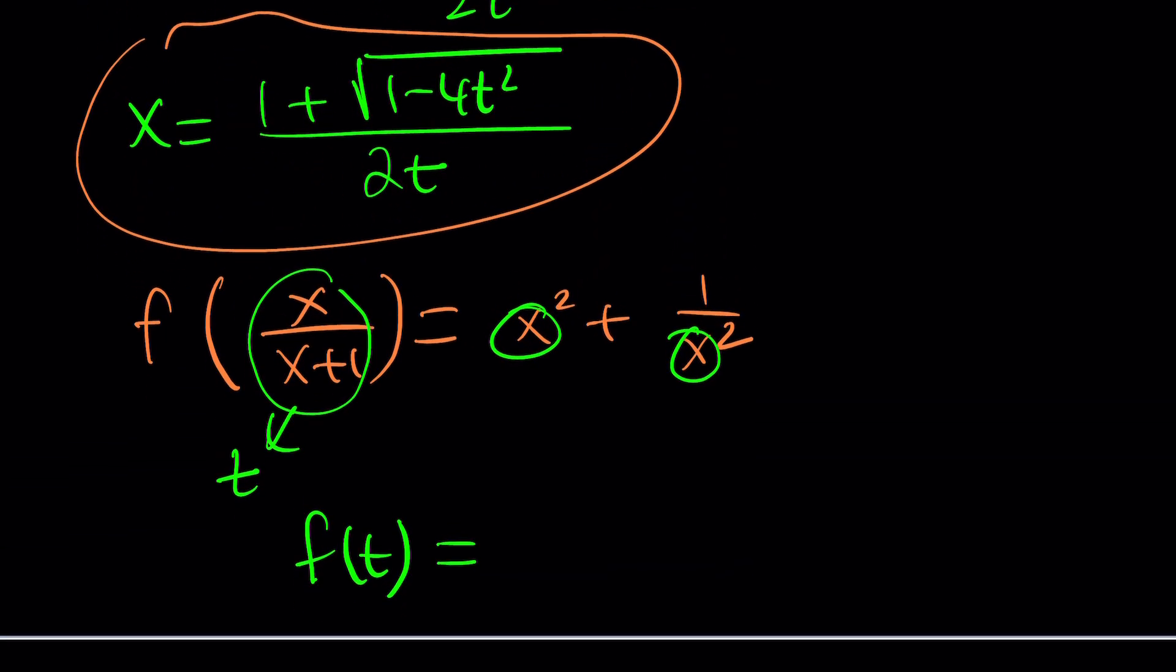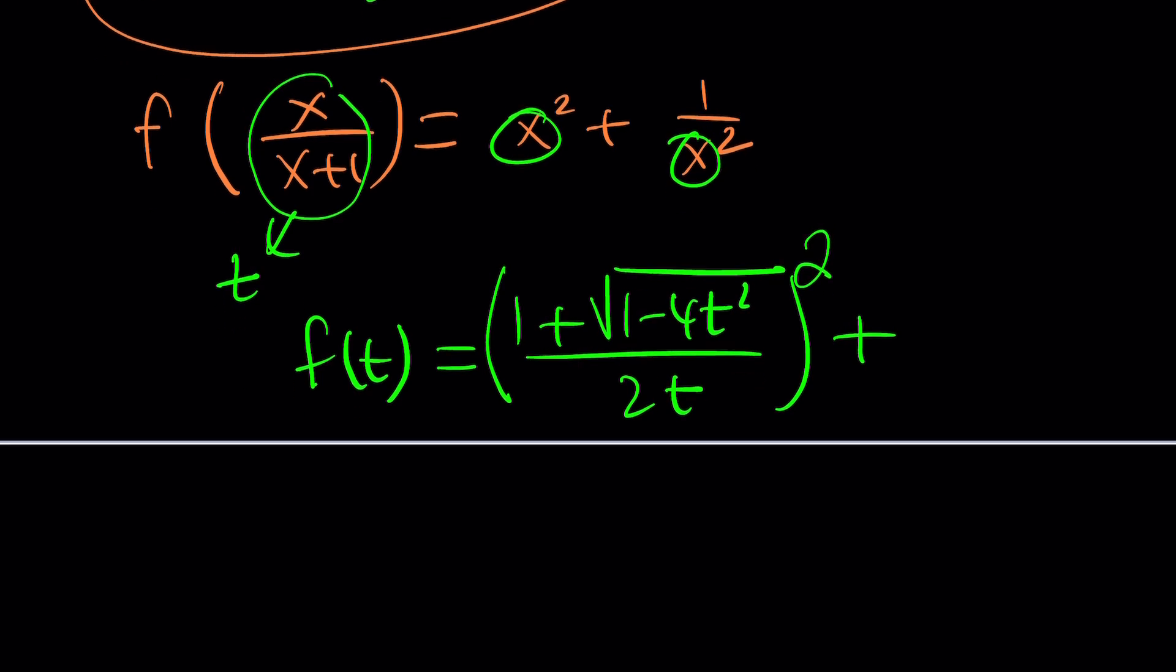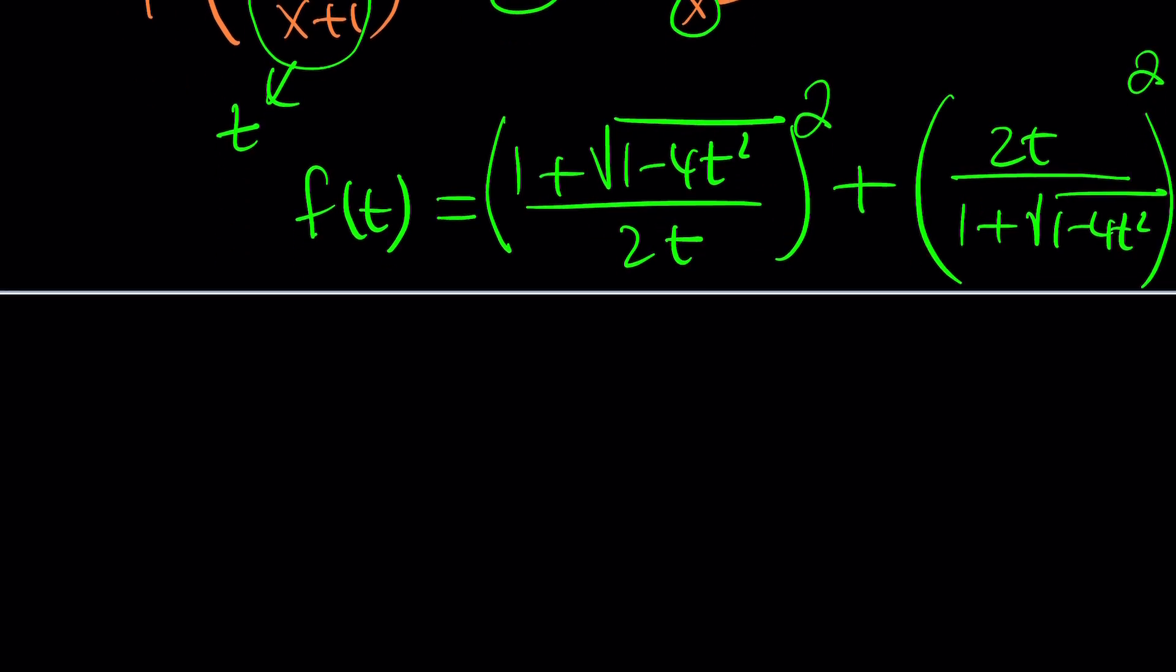But I'm going to do it on the right-hand side only because I know that I'm going to be getting f of t from the left-hand side. x will be replaced with 1 plus the square root of 1 minus 4t squared divided by 2t. And I need to square it. And then I need to square it and find the reciprocal. So I can safely say that the reciprocal of the square will be the square of the reciprocal. So I can just find the reciprocal, flip it, and then square it. Which is going to give me the exact same thing. And then this should be the answer. That kind of looks complicated. So let's try to simplify this a little bit. Can we? Let's give it a try.